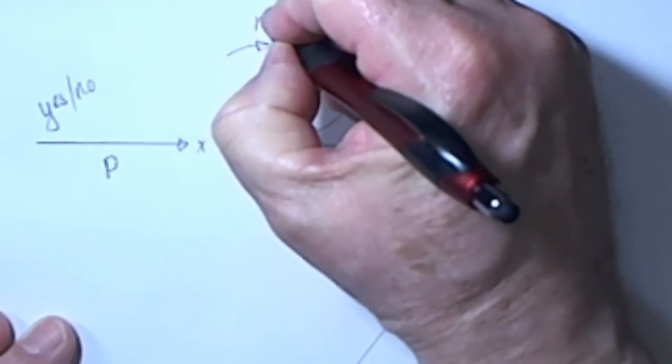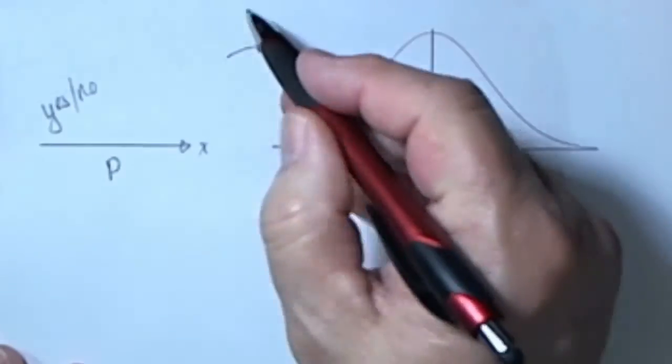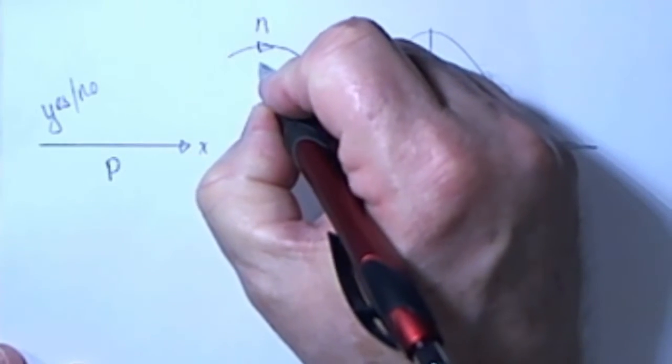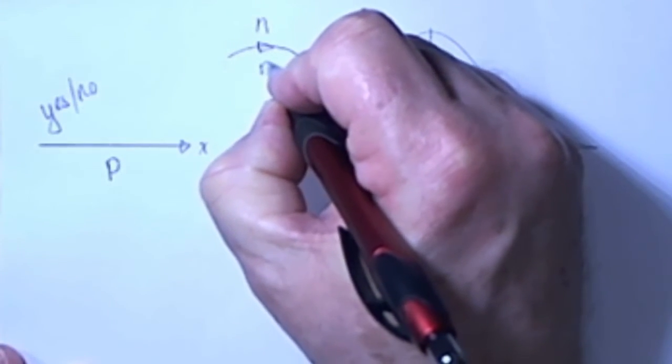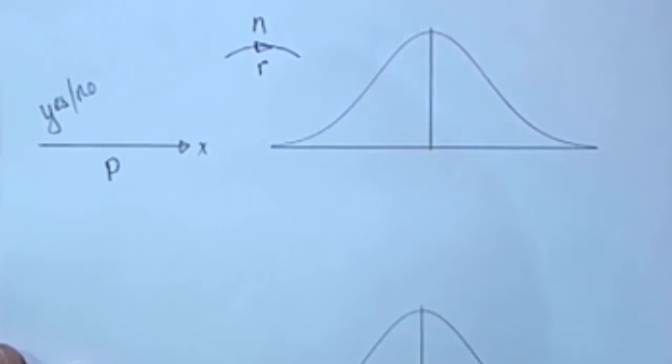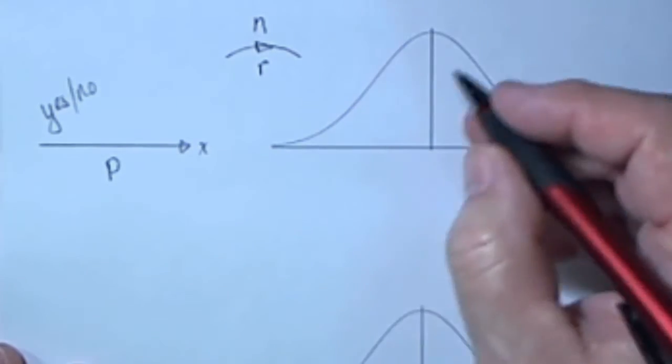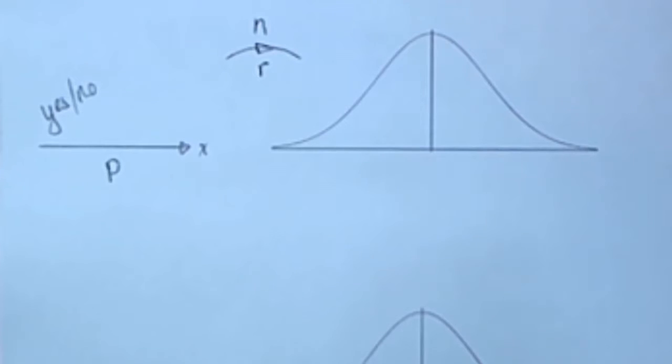In that sample, there is a certain number of them that are yeses. So we could calculate the P hat for that particular sample.